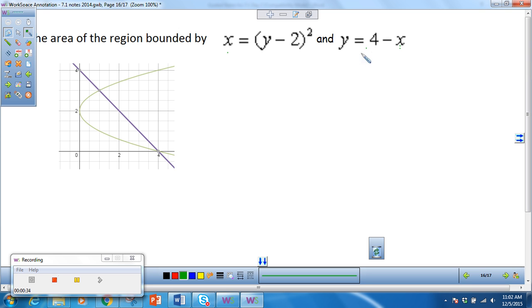So to solve for x, I'm going to subtract 4 from both sides. And I get negative x is equal to y minus 4. And then divide by negative 1. I get x is equal to negative y plus 4.